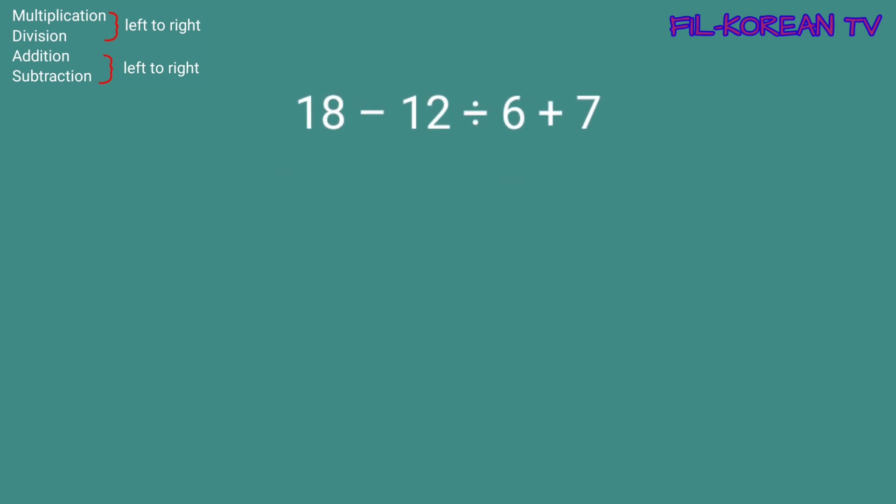Last problem: 18 minus 12 divided by 6 plus 7. Dito may tatlong operations. Ang una natin isosolve ay division. 12 divided by 6 equals 2. Kaya yung answer ay magiging 18 minus 2 plus 7.